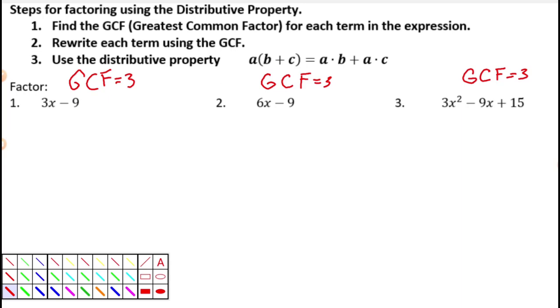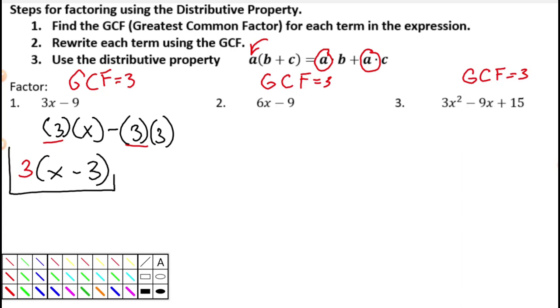So once you know your GCF, then rewrite each term using the GCF. So I'm going to write it out the long way, but eventually you'll start getting faster at this. So I'm going to write this one out as 3 times x, that's my first term, subtract, and 9 can be written as 3 times 3. Now once you have that, what you should notice is that once you have a common term, that is just going to end up outside the parenthesis. So this will end up as 3 times x subtract 3. And that one's done, game over.